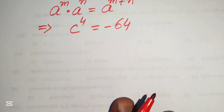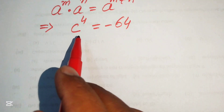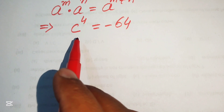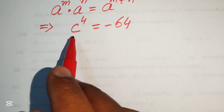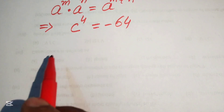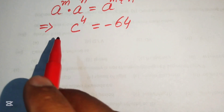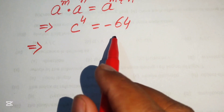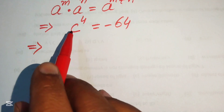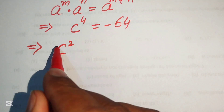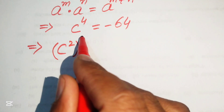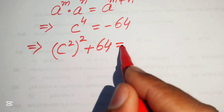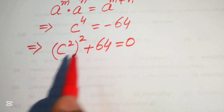This equation has highest power 4, so we need to find all four roots. First, we move minus 64 to the left-hand side and write c to the power of 4 as c squared whole squared, giving us c squared whole squared plus 64 equals 0.